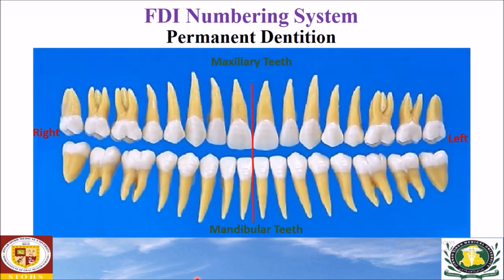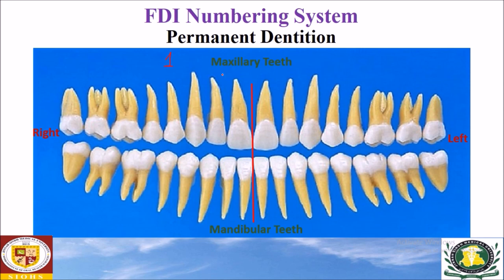Now we will do some exercises of the FDI notation system for the permanent dentition. This is a complete permanent dentition — 16 teeth in the upper arch and 16 in the lower arch, eight in each quadrant. The maxillary right central incisor — this quadrant is numbered as number one, the maxillary right. This tooth is the first tooth from the midline, so it is pronounced as one one, not eleven.